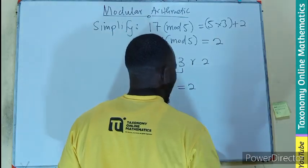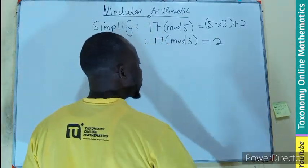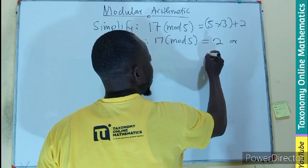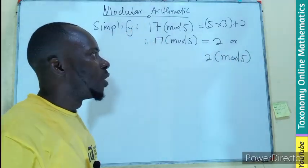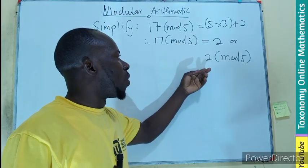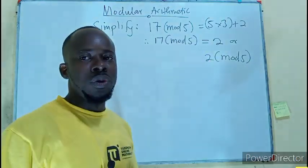In some cases people write it this way. Or 2 mod 5. So the answer will either be 2 or it will be 2 mod 5.